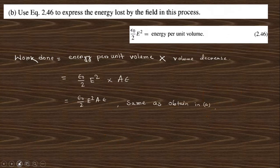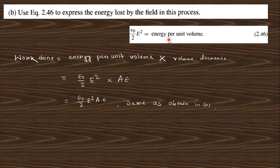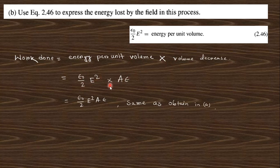Now using equation 2.46 to express the energy lost by the field: equation 2.46 gives the energy per unit volume as (ε₀/2)E². Multiplying by the volume, which is area A times displacement ε, gives W = (ε₀/2)E²·Aε. This is the same result as obtained in part (a), confirming both approaches are consistent.